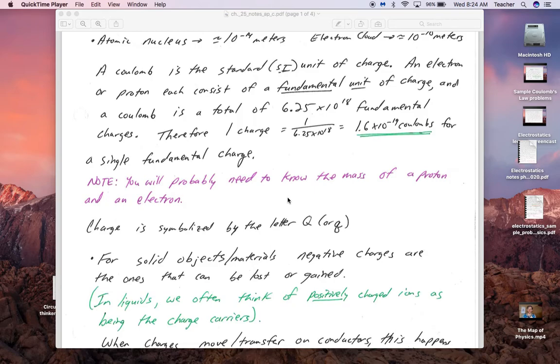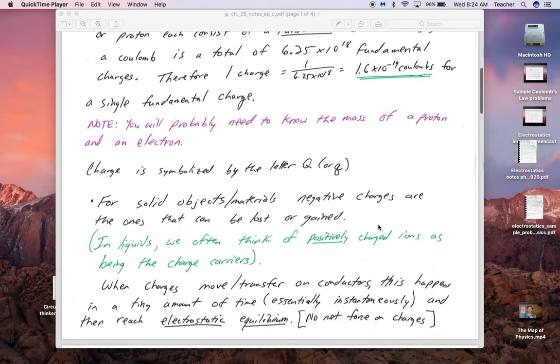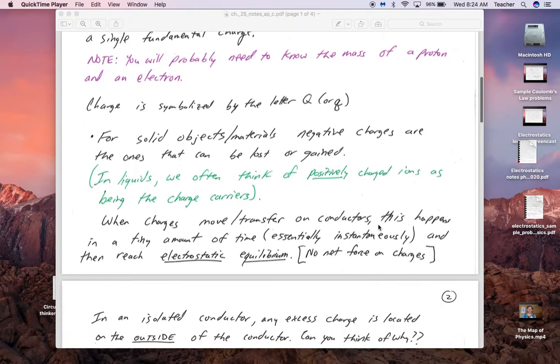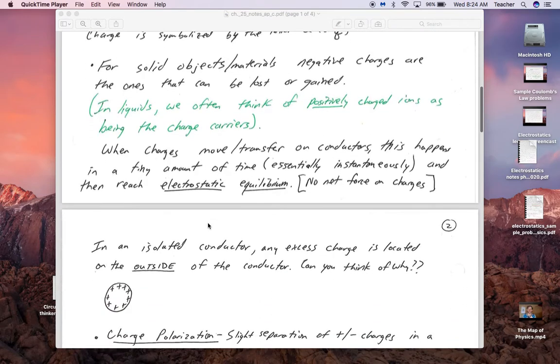You probably want to know the mass of a proton and electron. Those are on your formula sheet. A proton is about 2,000 times more massive than an electron. Charge is symbolized by the letter capital Q or lowercase q, depending on the situation.